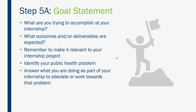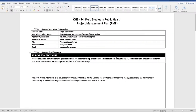Now let's review the pieces of your PMP. It really begins with your overarching goal statement — what are you trying to accomplish at your internship? What outcomes and deliverables are expected? Remember to make it relevant to your internship project, and be sure to identify your public health problem and what you are doing as part of your internship to alleviate or work towards that problem. Here in the example PMP on Canvas, the goal of the internship is to educate skilled nursing facilities on the Centers for Medicare and Medicaid regulations for antimicrobial stewardship in Nevada through developing a web-based training module hosted by CDC's TRAIN.